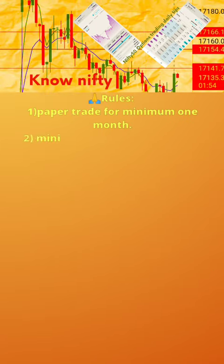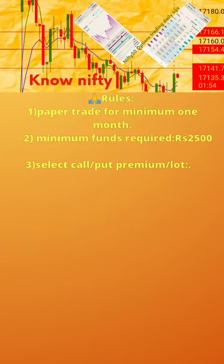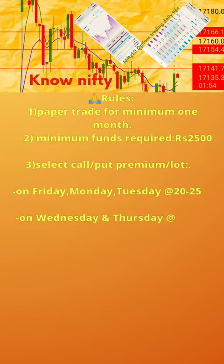Please follow the 7 rules below. 1. Paper trade for minimum 1 month. 2. Minimum funds required: 2500 rupees. 3. Select call or put premium per lot: on Friday, Monday, and Tuesday at the rate of 20–25; on Wednesday and Thursday at the rate of 15–25.